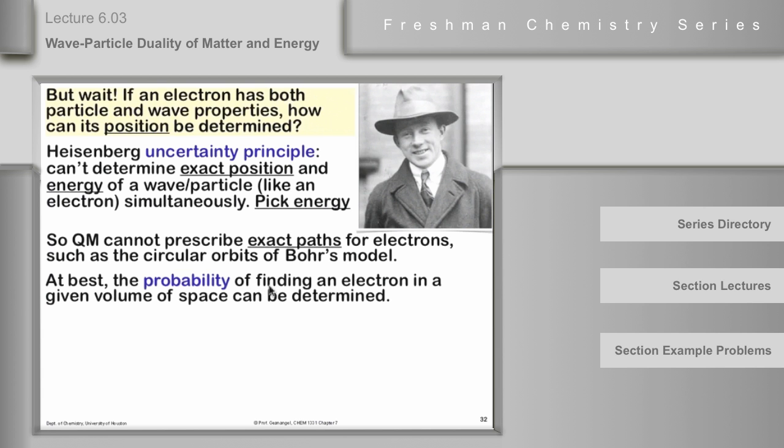At best, you could talk about the probability of finding the electron in a given volume of space. And we have come to think about that idea as representing electron density. The probability of finding the electron in a volume of space that we chose.